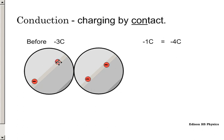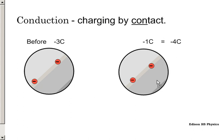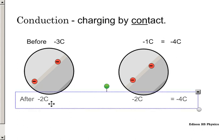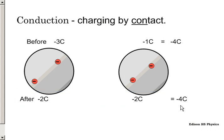Then we're going to separate the two spheres apart, and we're left with negative two on the left-hand side, negative two on the right-hand side for a total of negative four. Conservation of charge stands up.